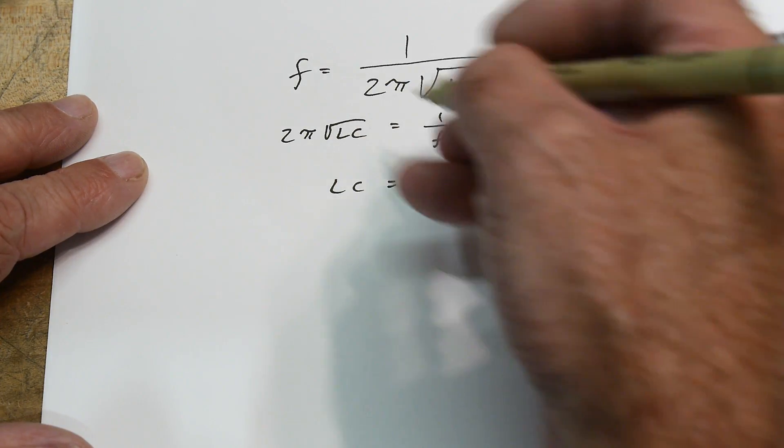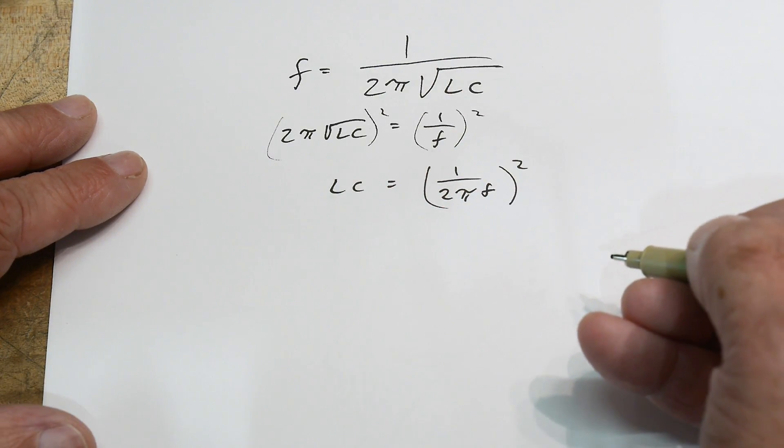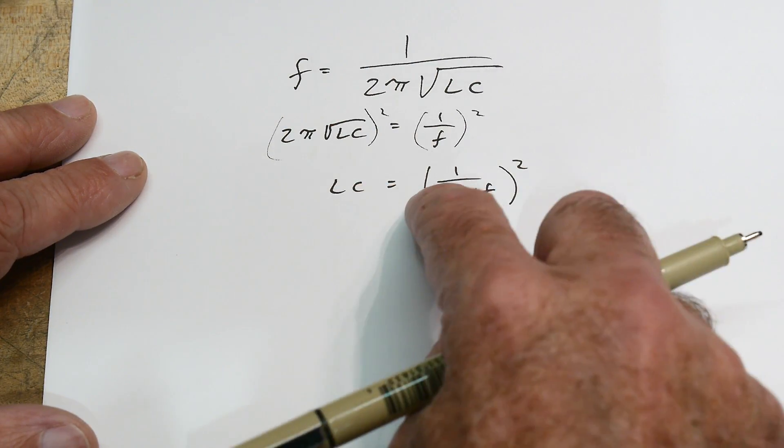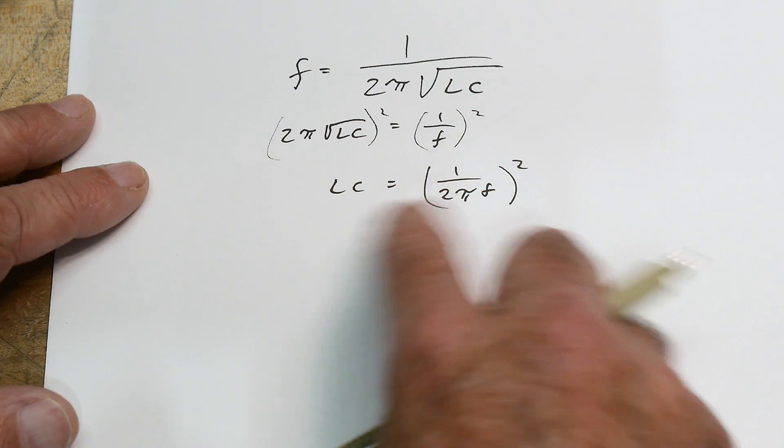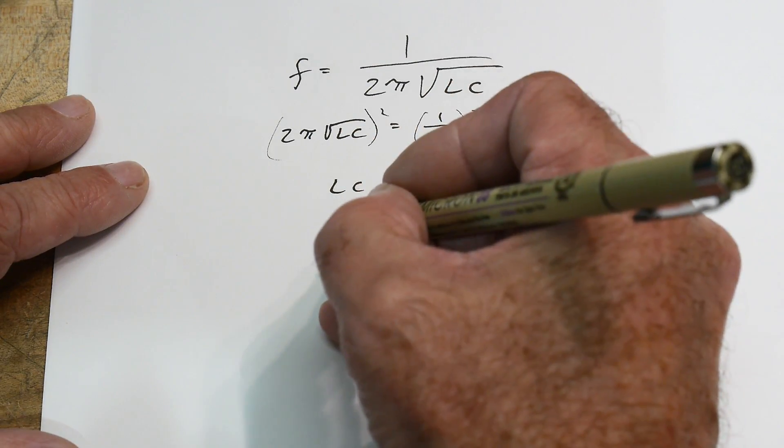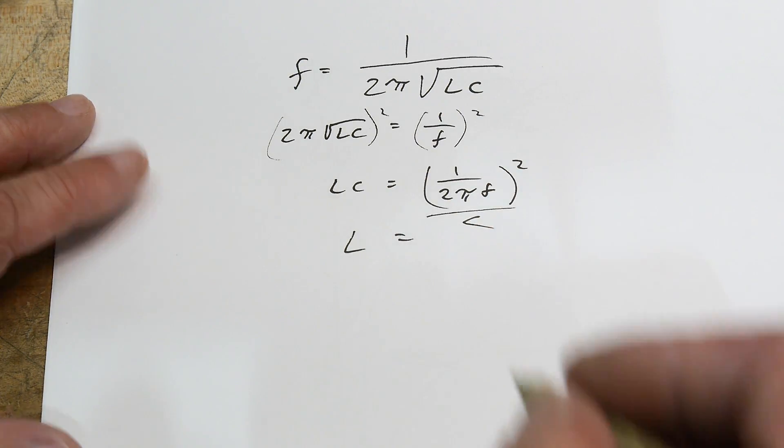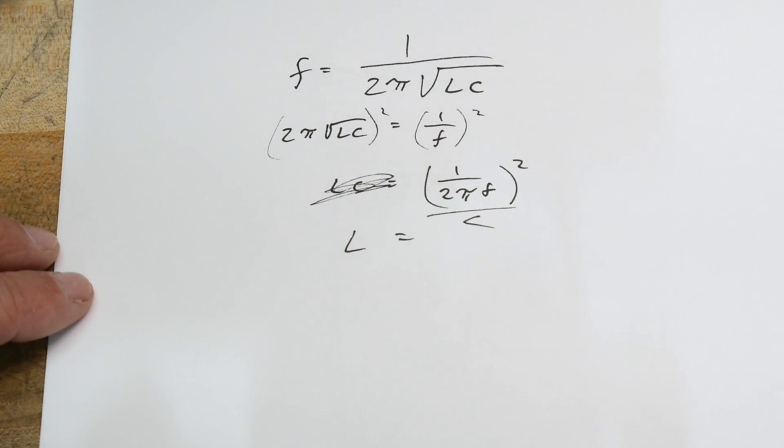Let's see, what am I doing? Okay, what we're going to do is we're going to square this side, we're going to square that side, and we're going to move the 2π over here. And that square of the LC gets rid of the square root, so we have LC equals that, and L equals all of that divided by C, right? Okay, so I'm just being lazy. Okay, so L equals all of that.